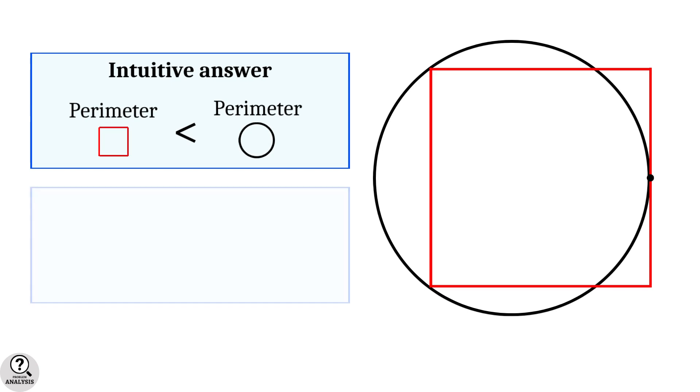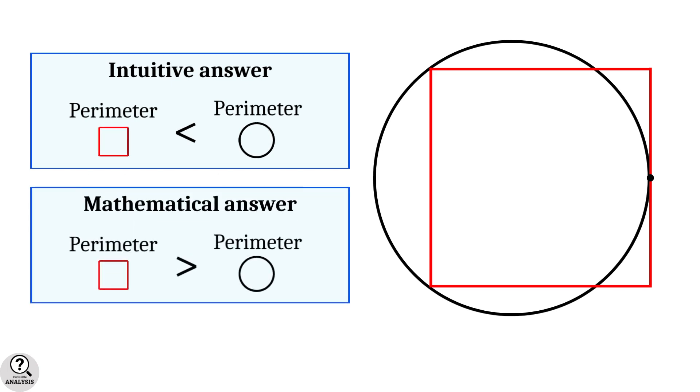But mathematically, we proved that the square has the larger perimeter. So in mathematics, the intuition need not be correct always. It can be wrong also.